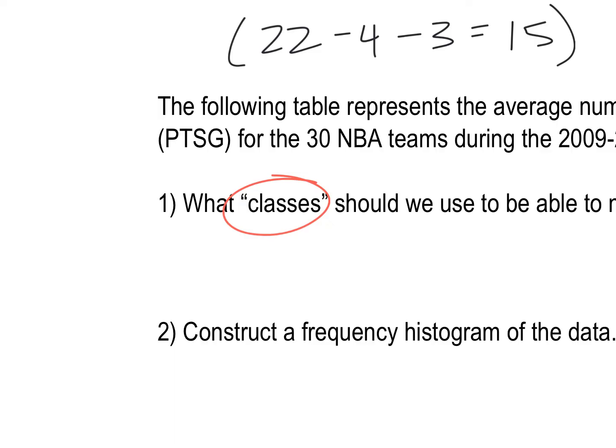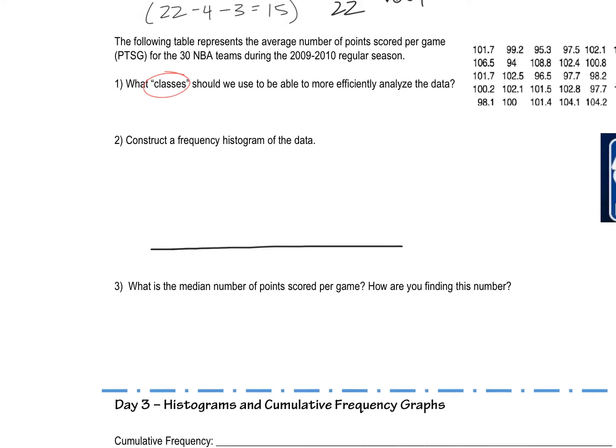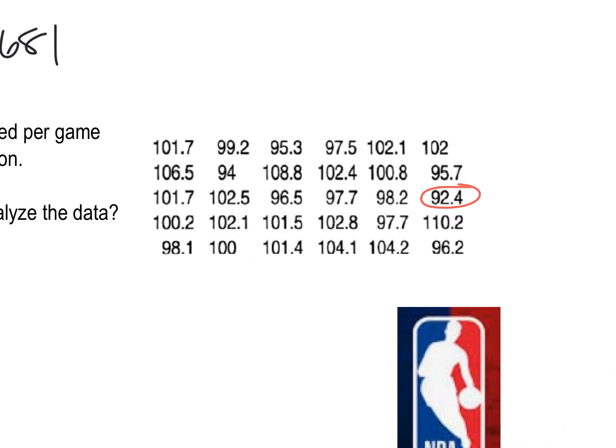What classes should we use to be able to more efficiently analyze the data? This word classes is going to be like our x-axis labels, and so I'll start my frequency histogram down here. And what I want to do is, I don't want to have a bar for like 100 points, and a bar for 101 points, and a bar for 102 points, because first of all, a lot of these numbers are decimals. I don't know where those would fall. Second of all, I would have a lot of bars, and that would be a really difficult graph to analyze. So, what I have to figure out is, how about I make like 100 to 105, and that would be one of my bars. And any of these values that are between 100 and 105 would fall into that category. What I need to figure out is what my minimum and my maximum number are here. This is the minimum, if you scan the list really quick, and the maximum happens to be right under it, 110.